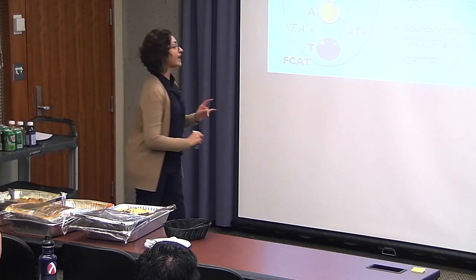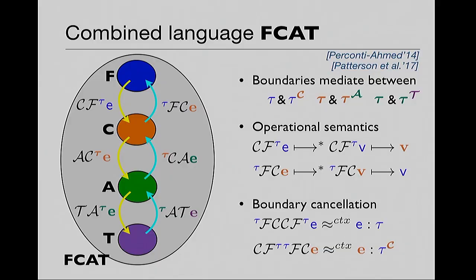Not any multi-language semantics will suffice for compiler correctness — you need to design a multi-language semantics that has the right property. You're designing this multi-language semantics to serve as a specification of compiler correctness. Here's an essential property we need: if you have a component, wrap it one way and then the other, it should remain contextually equivalent in the multilanguage to the underlying thing. This holds for all boundaries.